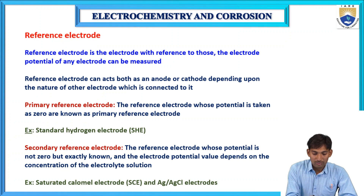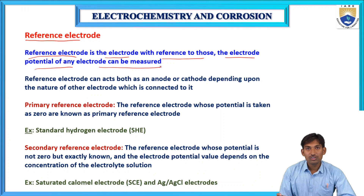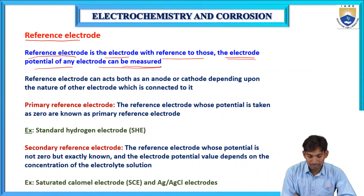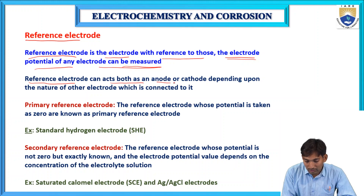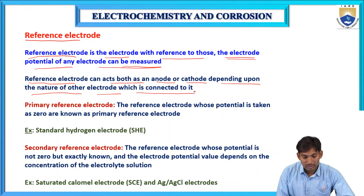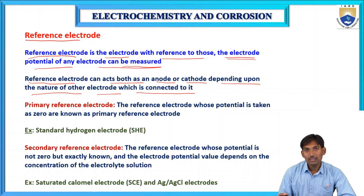First, reference electrode. A reference electrode is the electrode with reference to which the electrode potential of any other electrode can be measured. A reference electrode can act as both anode or cathode depending upon the nature of the other electrode which is connected to it.